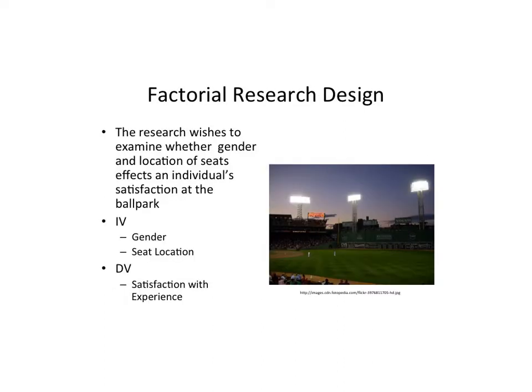Let's take a look at an example. The researcher wishes to examine whether gender and location of seats affects an individual's satisfaction at the ballpark. So here we have two independent variables: an independent groups variable in gender — males or females — and seat location, where we compare box seats to people in the bleachers, and look at how those two things interact to affect the satisfaction of the ticket holder's experience.